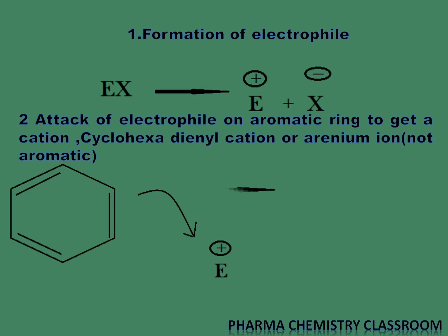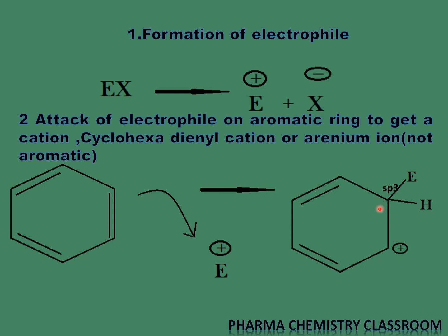The benzene ring reacts with the electrophile and one of the double bonds is utilized to get a cation. The cation is formed, which has a positive charge, and this double bond is utilized for bonding with the electrophile. This carbon is now sp3 hybridized. Our formed cation is resonance stabilized but not aromatic.